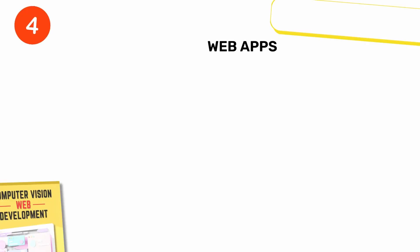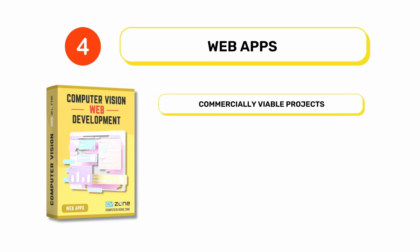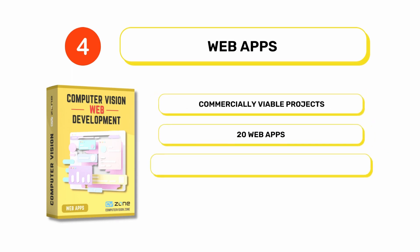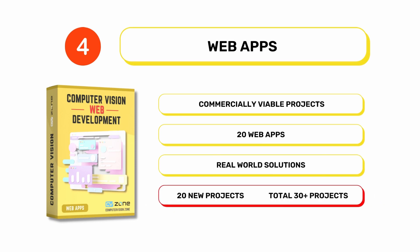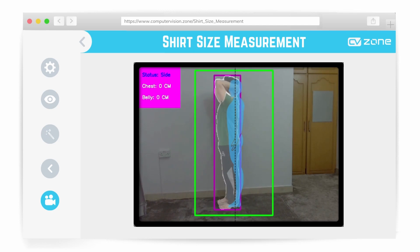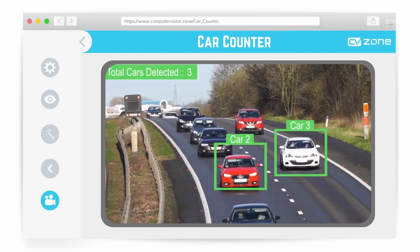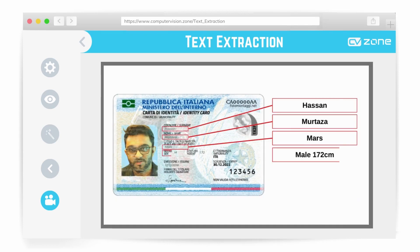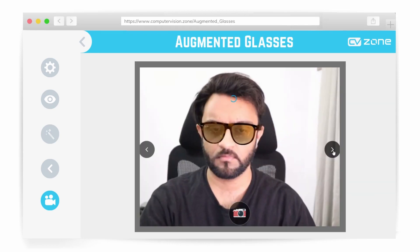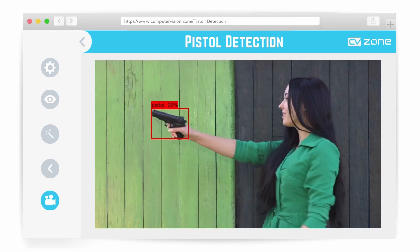The final part, computer vision web apps, is dedicated to commercially viable projects. We will create more than 20 web apps to get the maximum exposure to real world applications. These will include automated shirt size measurement, customer engagement, car counter, face attendance, text extraction, AR glasses, face mask detection, pistol detection, and much more.